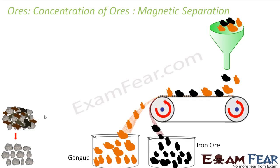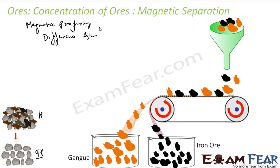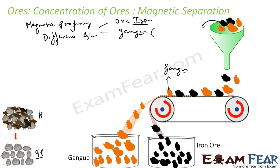The second process is magnetic separation. Again, the input is raw ore and the output is concentrated ore. This is based on the difference in the magnetic property between the ore and the gangue particles. It is generally used to remove iron — for iron ore, the orange particles are the gangue and the black ones are the actual iron ore. Iron is magnetic, so iron ore will also be magnetic.